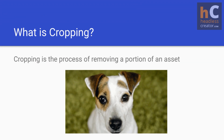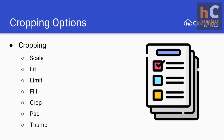We've mentioned cropping a few times, so let's define it very simply. Cropping is the process of removing a portion of an asset. Cropping can also help you reframe your subject or attract the viewer's attention to a specific part of your photo for greater impact. There are many different ways to crop images, and the most common ones are listed here. Cloudinary specifically offers over 14 cropping modes currently, and more are often being developed — each cropping option has a different use case.